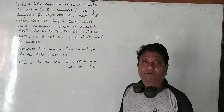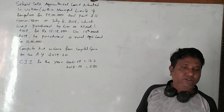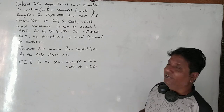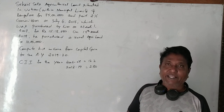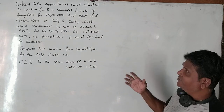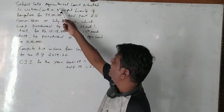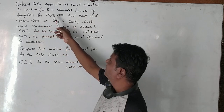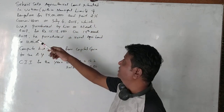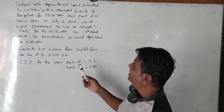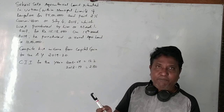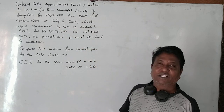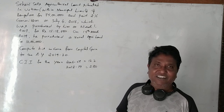Hello students, today we are continuing with income from capital gains. As shown in the previous videos on how to calculate capital gains, we now have a question on the board from the 2019 question paper for six marks. Shri Hari sells agricultural land situated in an urban area within the municipal limits of Bangalore for rupees 75 lakhs, and paid 2% commission, on July 4th 2018.